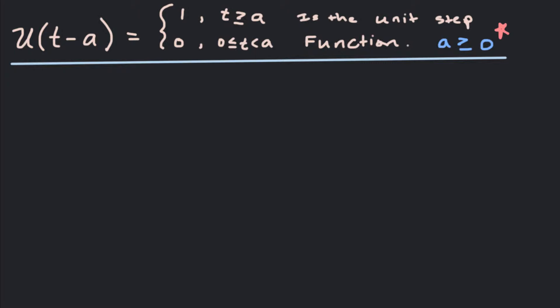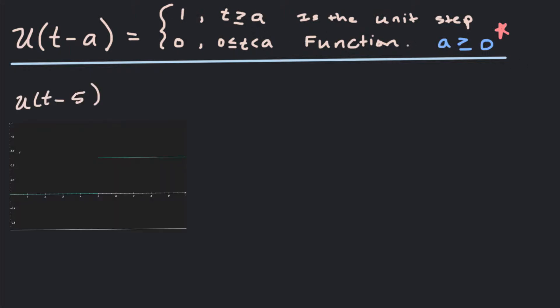The unit step function, by definition, is a function that steps up to 1 at some real number a greater than or equal to 0. At that point, the unit step function goes from being 0 to being 1 once we reach t equals a. For example, u(t-5) would be 0 until we get to t equals 5, and then it jumps up to 1.